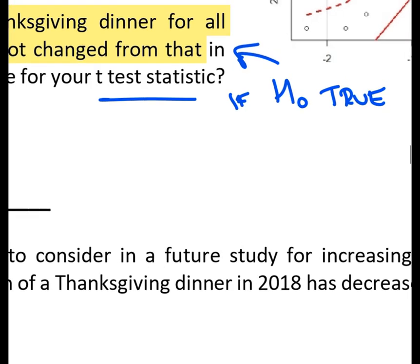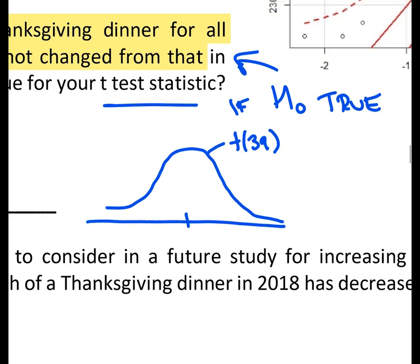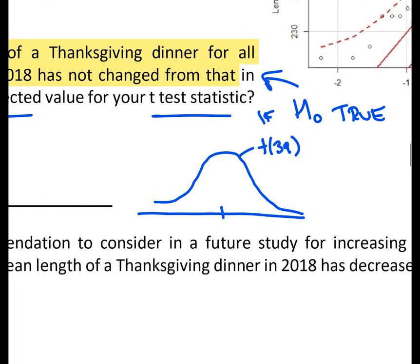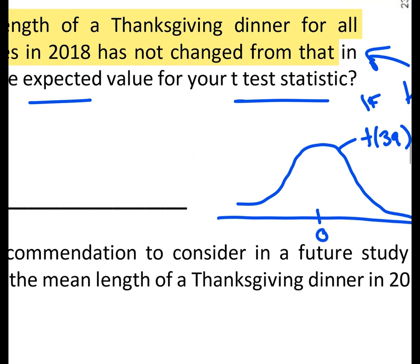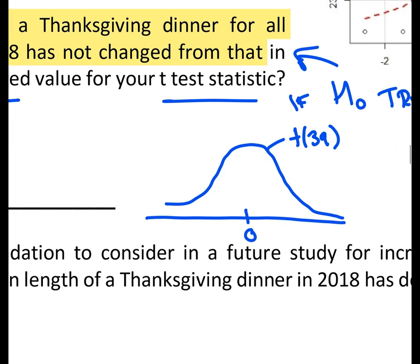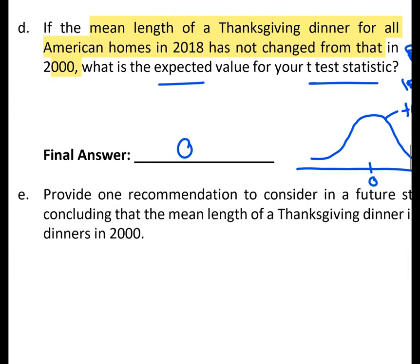Well, we think about what that distribution would look like. Remember our t-distribution. It's symmetric. Slightly wider than a normal distribution. Here we would have t and 39 degrees of freedom. But when we're thinking about the expected value, we simply want to know what the mean of this distribution is. And we know that the mean of our t-distribution, it's centered around a value of 0. So all we're saying here is if the null hypothesis is actually true, and this is our distribution for our test statistic, what is that average value? That average value, that expected value, is simply 0.